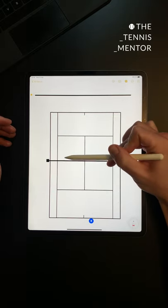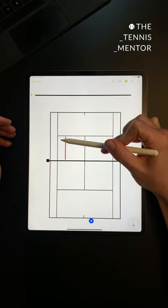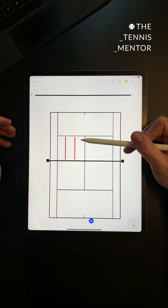Split your service box into three using throw down lines. You'll have the wide zone, the centre zone or the body zone, and the tee zone.